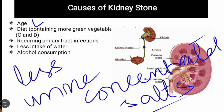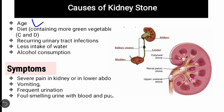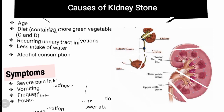Alcohol کی وجہ سے بھی بہت ساری بیماریاں ہوتی ہیں — یہ بھی kidney stone کی ایک وجہ ہے۔ اب اس کے symptoms کیا ہیں؟ Symptoms میں شامل ہیں: severe pain in kidney اور lower abdomen، vomiting، frequent urination — یعنی زیادہ urine release ہونا — اور اس کے علاوہ foul smelling urine with blood and pus۔